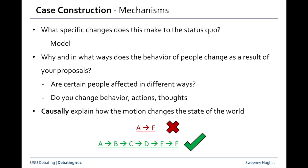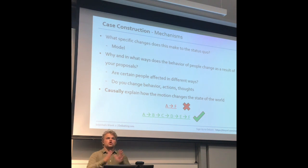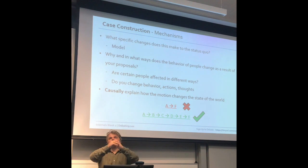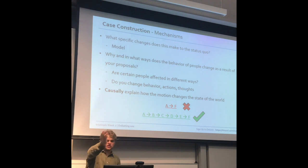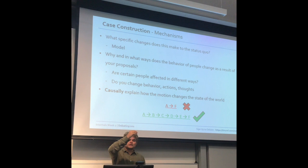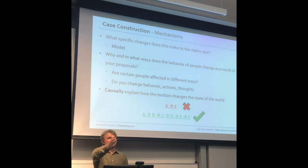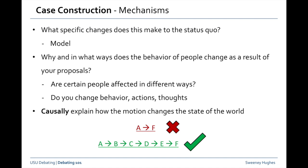The second thing in case construction is mechanisms — what specific changes you would make to the status quo. That can take the form of your model or, in debates where a model isn't being used, other things. Effectively, you should explain in what ways you change the behaviour of individuals as a direct result of your proposals, and you should try to causally explain how your mechanism or model changes the state of the world specifically.